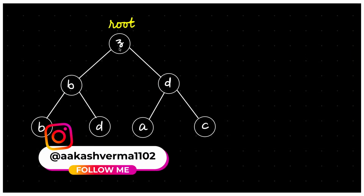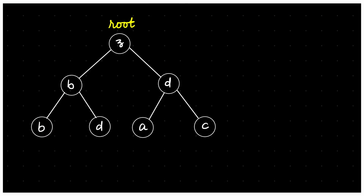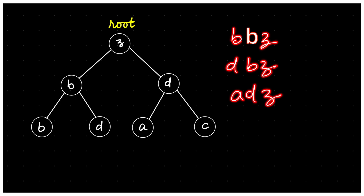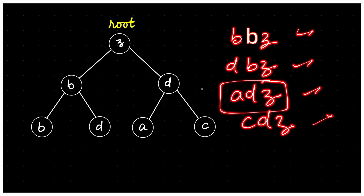I've taken a tree with character nodes for simplicity, but in the original array the nodes would be integers like 25, 1, 3, 0, etc. Now what we have to do — there will be 4 different strings: 'b,d,z', 'd,b,z', 'a,d,z', and 'c,d,z'. Out of these 4 strings the smallest is 'a,d,z'. So that would be my answer. This is a simple question — we just have to return the smallest one.